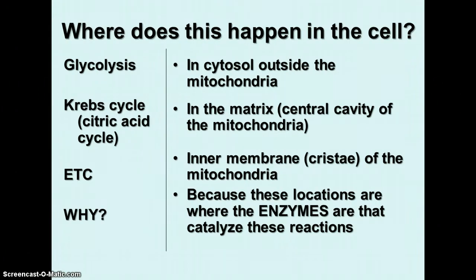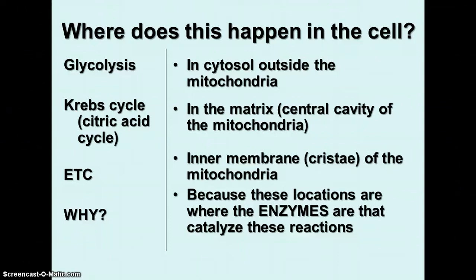Where does all this happen? Glycolysis occurs in the cytosol — or cytoplasm — outside the mitochondria. The Krebs cycle, also called the citric acid cycle, occurs in the matrix, or central cavity, of the mitochondrion. And the electron transport chain occurs in the inner membrane, or cristae, of the mitochondria. These things occur in these places because that's where the enzymes are found that catalyze the reactions, and cells have thousands of different enzymes, each specific to a particular substrate.